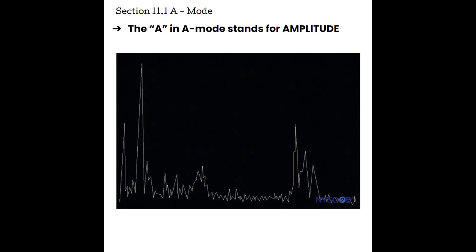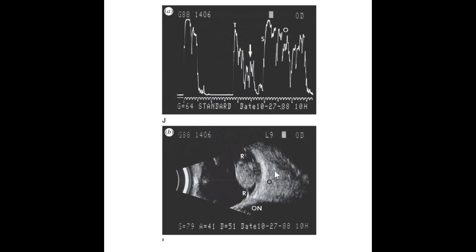So if we could superimpose an image over what an A mode display looks like, we would see that the strong reflectors are bright white, those weaker reflectors are going to be different shades of gray, and the non-reflectors are black or anechoic. Notice how we have really strong reflectors here, and they match up with this really bright white strong reflector in the image. Notice how it's relatively flat through here — that matches up with this dark anechoic area. These weaker reflectors in between match up with the weaker grays in between.